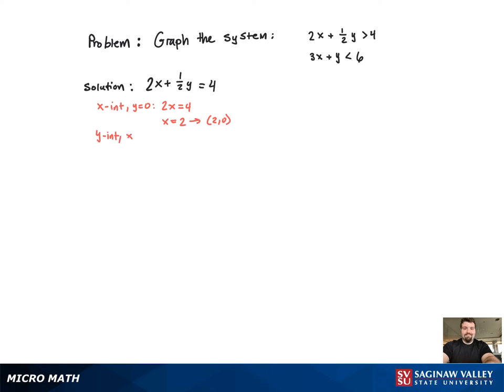Now for the y-intercept. We get 1 half y equals 4, multiply both sides by 2, we get y equals 8, and there's the second point.